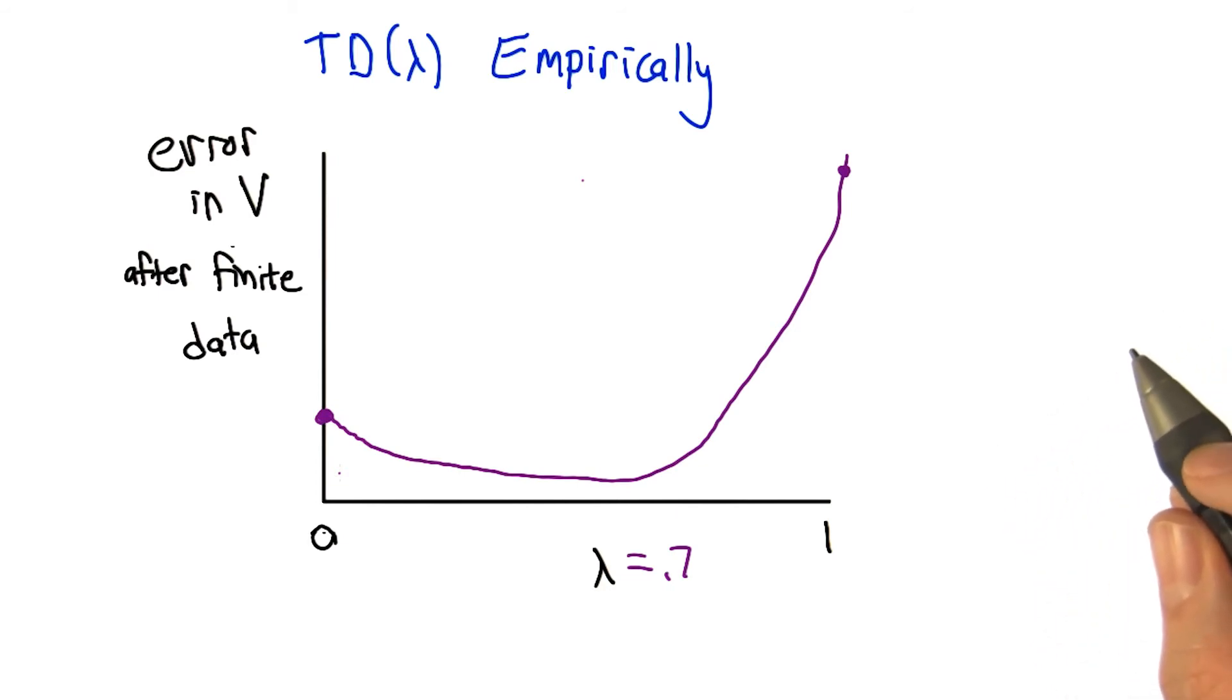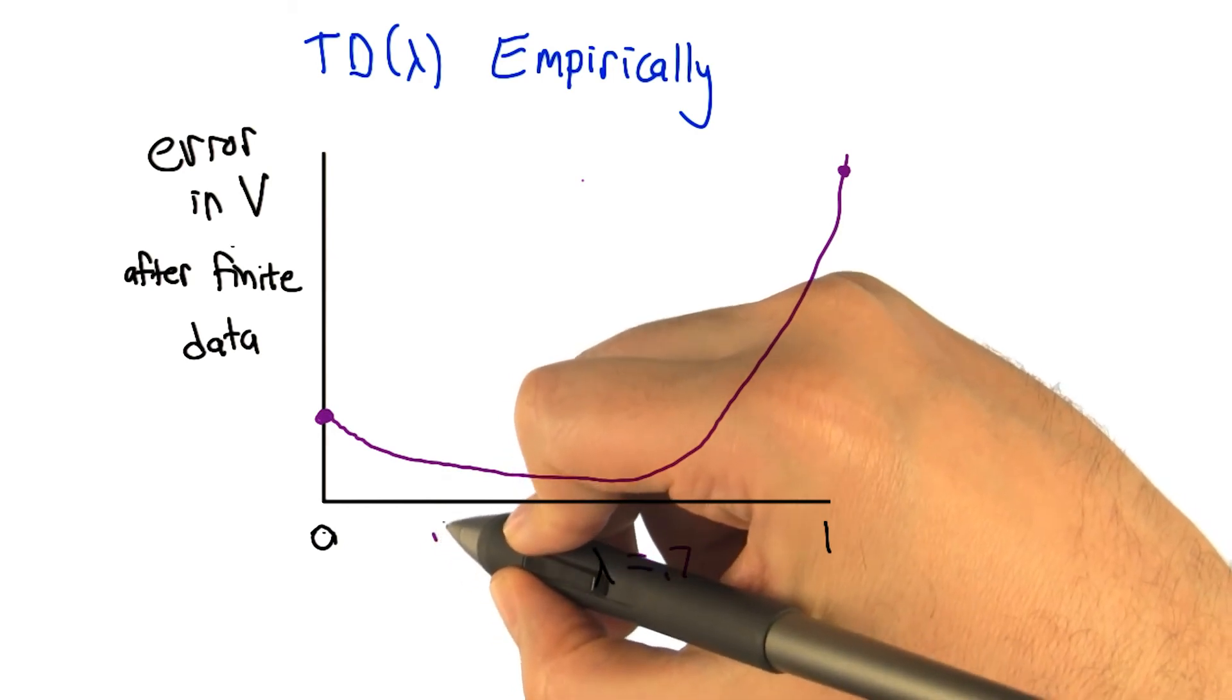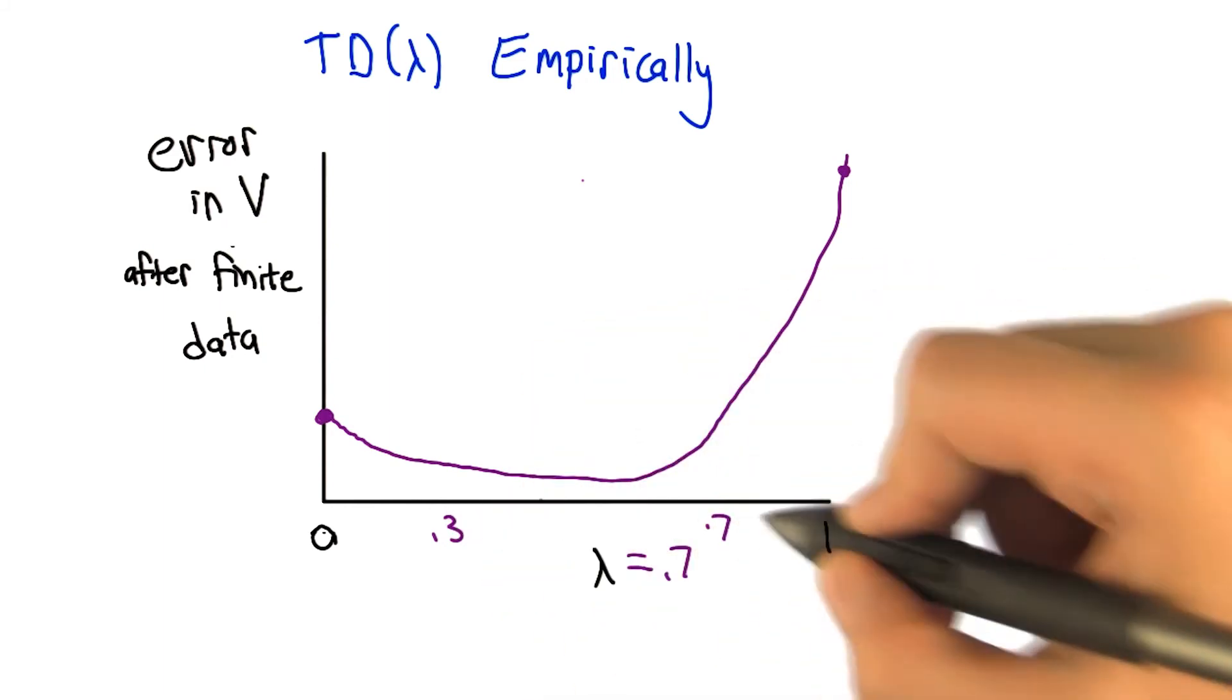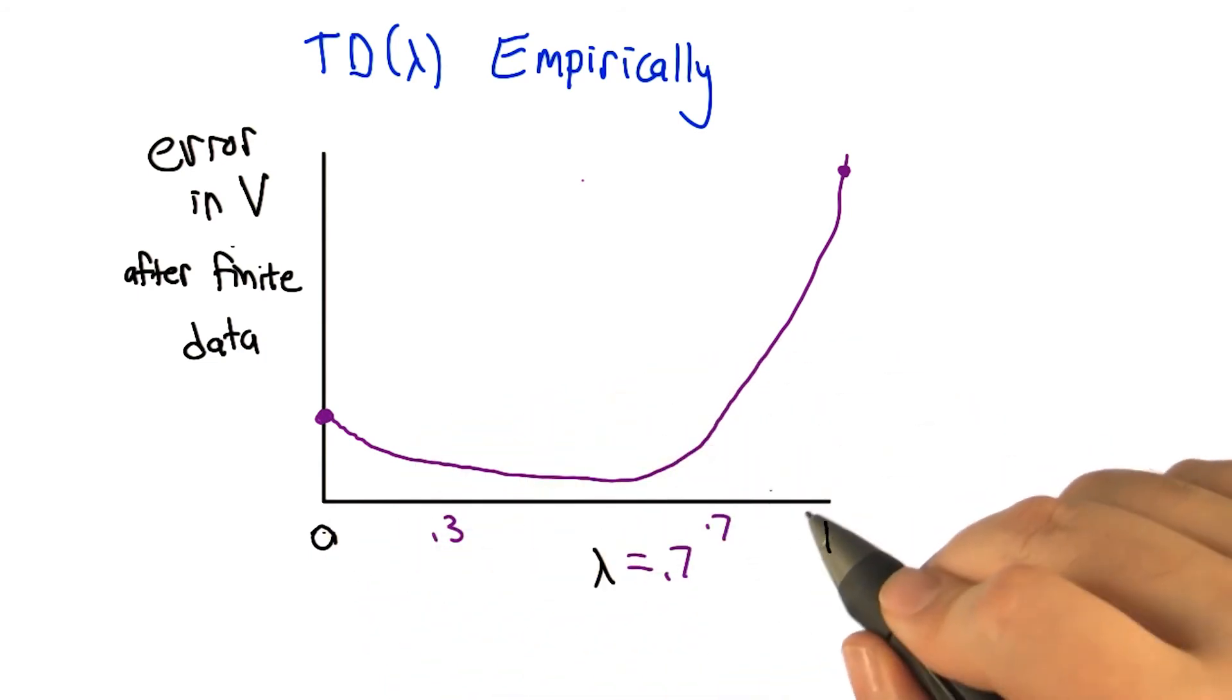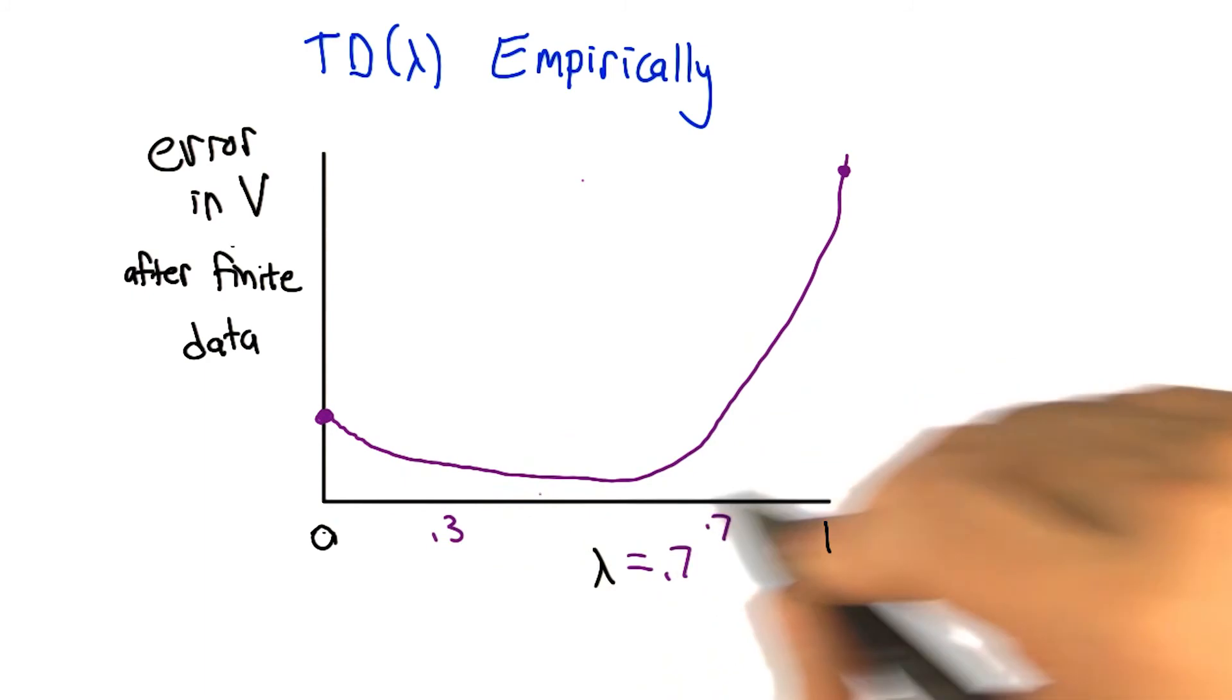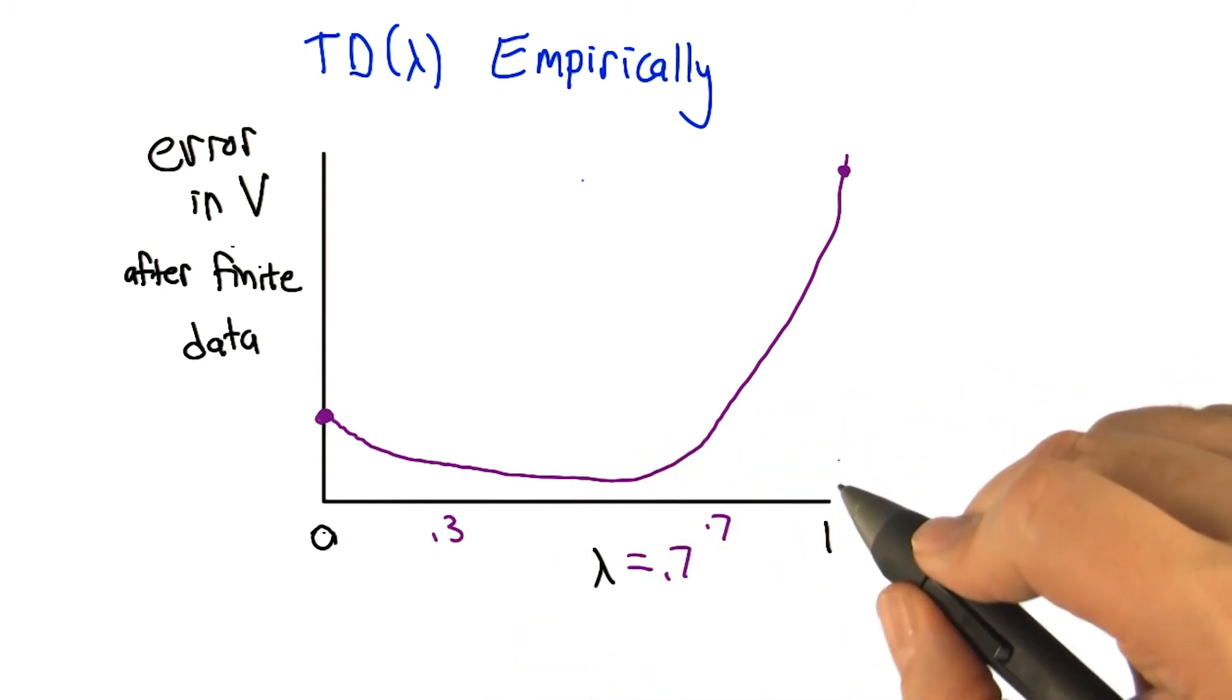Did you pick 0.7 on purpose? I remember reading a paper once that suggested that basically everyone uses lambda equals 0.7. I typically see 0.3 to 0.7 as values where things tend to work out, where this bottom tends to fall somewhere between 0.3 and 0.7. Personally, I always use 0 because it works better with control. I have had better performance and better understanding of what happens in the 0 case. But it is true that if you actually run it with a finite amount of data, it tends to bottom out somewhere between 0.3 and 0.7.